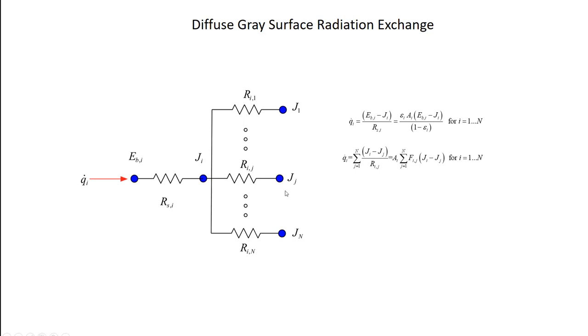So the situation gets just slightly more complicated if I have a gray surface. Now I'm still just looking at one surface so that I can picture it easily. This one surface, I put in heat. This is my net radiation heat transfer to surface I. I go through the surface resistance for surface I, and I get to the radiosity for surface I. And then the radiosity for surface I is going to interact with all the radiosities for all the other surfaces through the same set of surface-to-surface resistances. So what are my equations now?